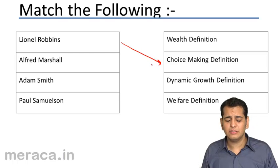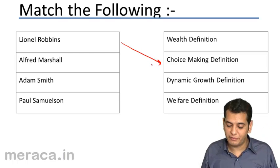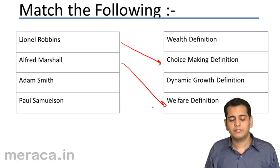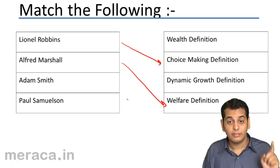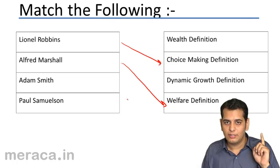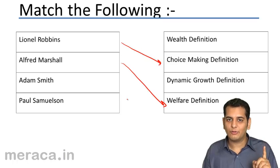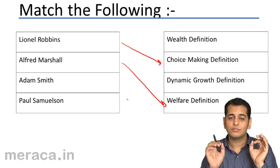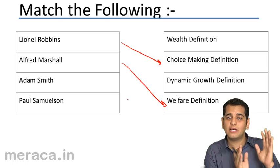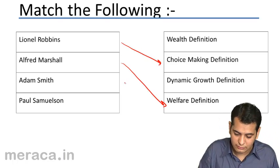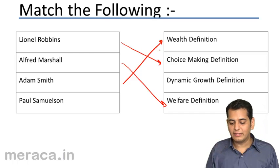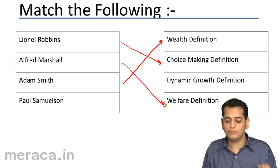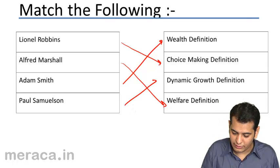Alfred Marshall gave the welfare definition. Adam Smith is the father of economics — he was the first person to define economics, and he defined it as a science of wealth. And finally, Paul Samuelson gave the definition of economics as a science of dynamic growth and development.